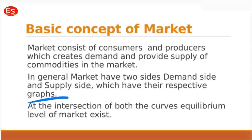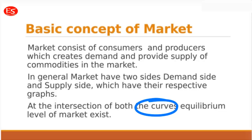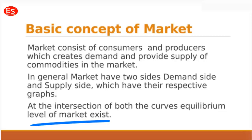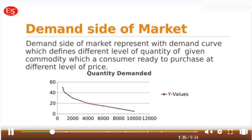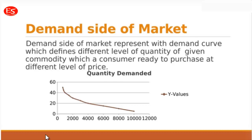These two sides are defined by their respective graphs, so it is very important to understand the concepts of demand and supply to have a better understanding about the market. We also need to understand the intersection of the demand curve and the supply curve, which gives us the equilibrium level of the market — the price at which the consumer is ready to purchase and the supplier is ready to sell a given commodity at a given quantity.